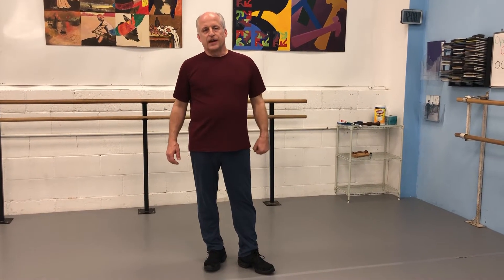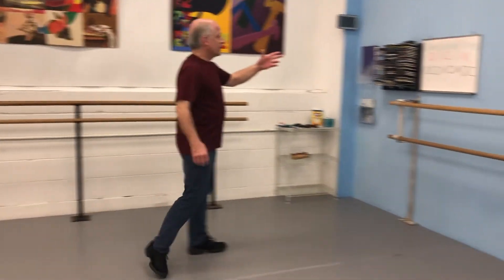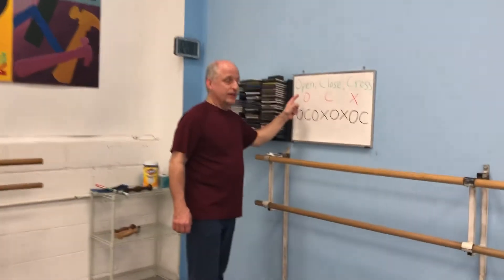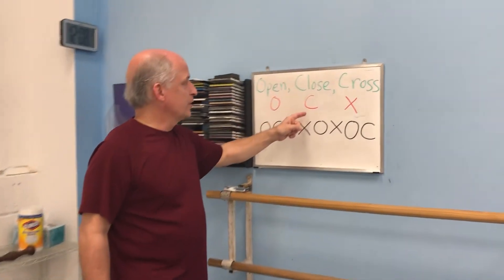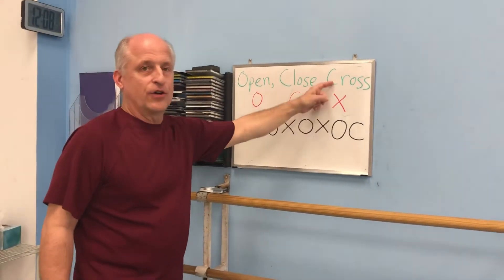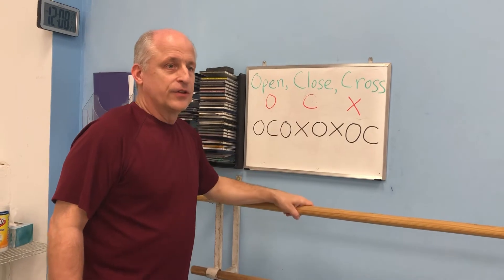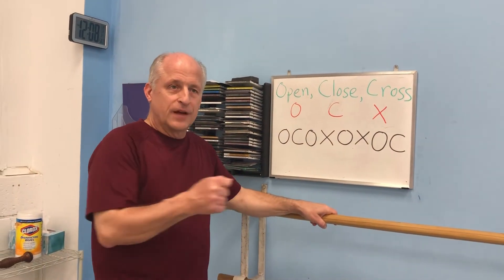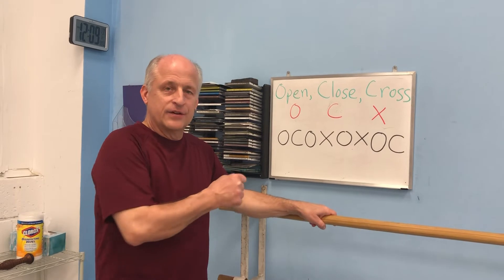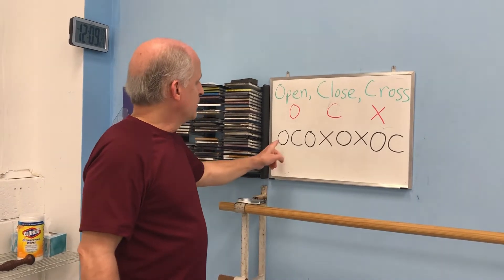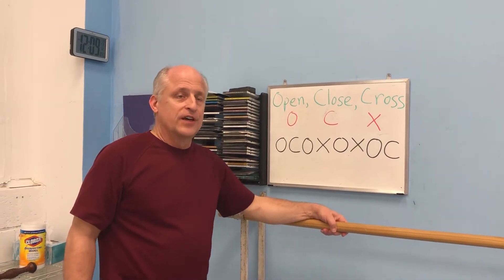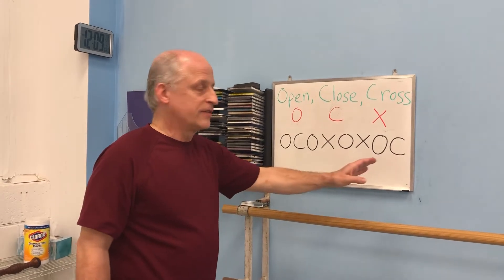We want to then represent that visually. Over here on the whiteboard I represent open with an O, close with a C, and cross with an X. So the children could write out a scheme of alternating ones, and in ballet we usually use eight counts of music.